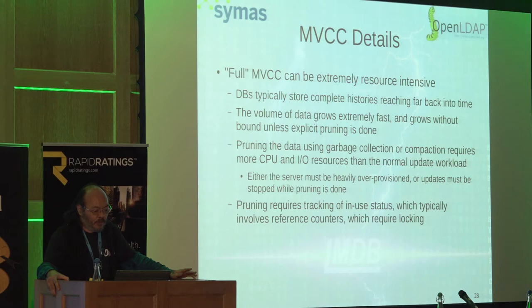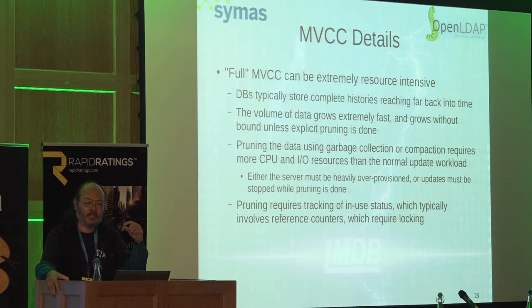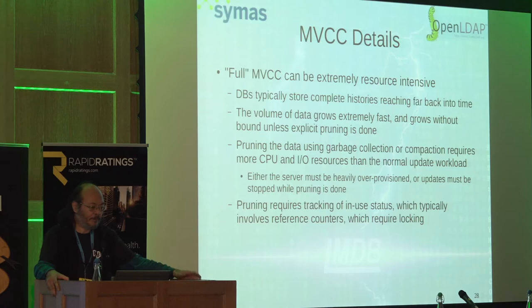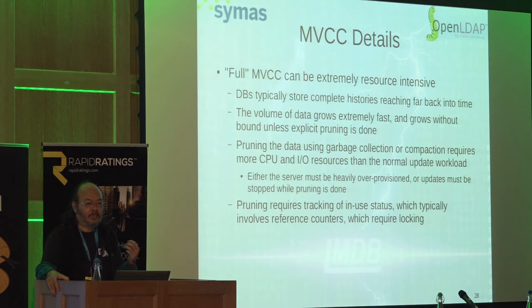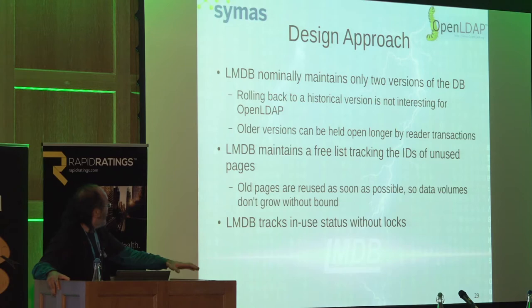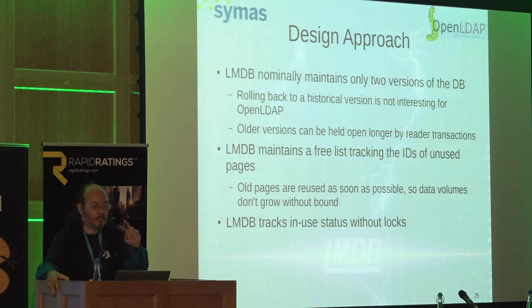If your server is running at peak speed for accepting user writes and you're going to run a background pruning job, that either means you've over-provisioned the server because you'll have another large write consumer during pruning, or when pruning starts all your user writes will slow down. Having a background compaction or pruning job is a terrible idea if you need to deliver fixed performance with a fixed set of hardware. In LMDB, we really only maintain two versions of the database — a page zero and a page one — and we just ping-pong between them as you write new transactions.